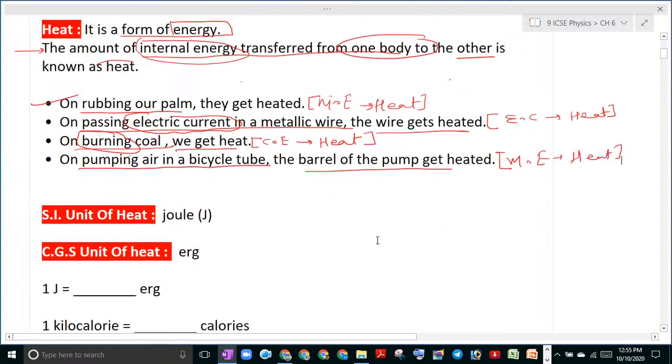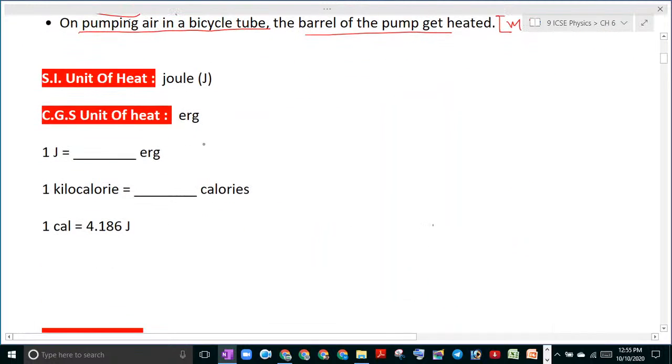If we talk about the SI unit of heat, then the SI unit of heat is joule. The CGS unit is erg. You have to remember these things. So how much erg is in 1 joule? That is 10 to the power 7 erg.